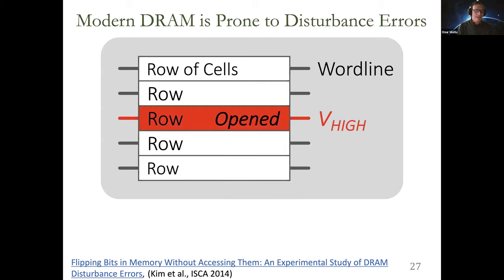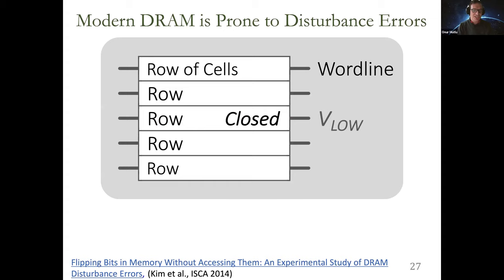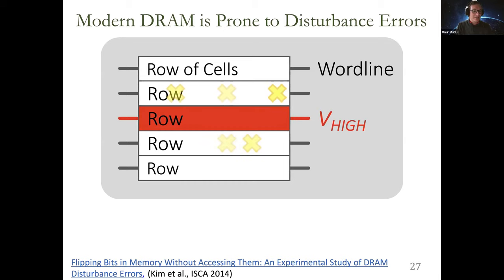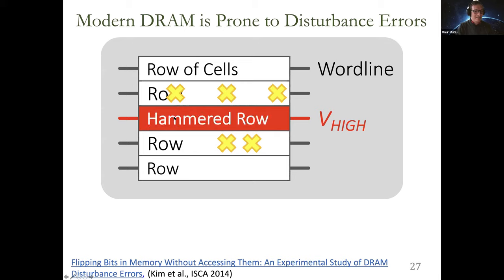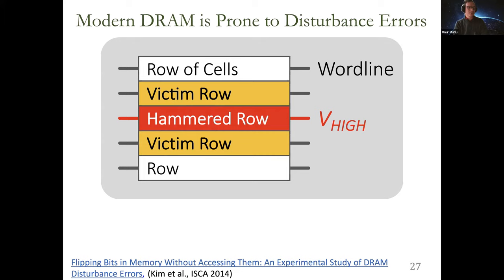What is read disturb in DRAM? To access a cell in a row, you apply high voltage to that row — activating it — then apply low voltage to close it, called pre-charge. If you keep doing this repeatedly — activate, pre-charge, activate, pre-charge — enough times before the cells get refreshed, you get bit flips in physically adjacent rows. This should not happen because you're not writing to those rows. You're violating physical isolation and also virtual isolation. We showed that more than 80% of chips from three major DRAM manufacturers exhibited this vulnerability.